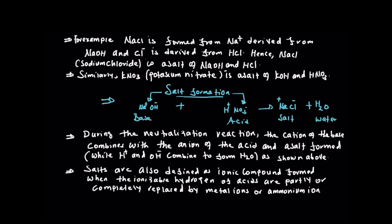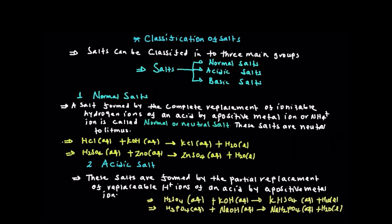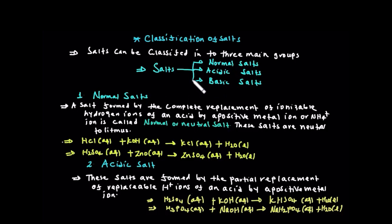We have a great classification of salts. Salts can be classified into three main groups: normal salt, acidic salt, and basic salt. Let's see them one by one.